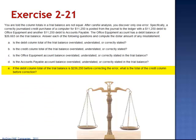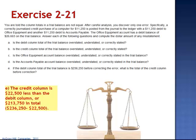If the debit column total of the trial balance is $236,250 before correcting the error, what is the total of the credit column before the correction? The credit column is $22,500 less than the debit column, or $213,750 in total. The correct amount, $236,250, minus the amount of the error, $22,500.